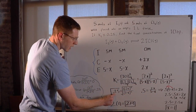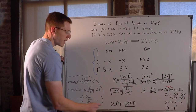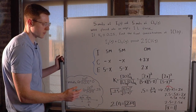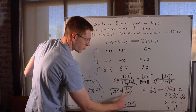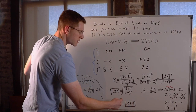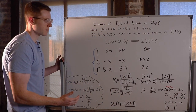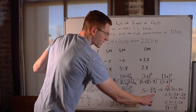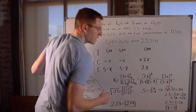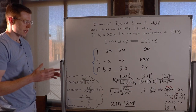Plugging in 0.25 for Kc gives 0.25 equals (2X)² over (5 minus X)². To eliminate the squares, I took the square root of both sides: the square root of 0.25 is 0.5, and the squares cancel, leaving 0.5 equals 2X over (5 minus X). Multiplying both sides by (5 minus X) and distributing, with a little rearrangement, X equals 1.